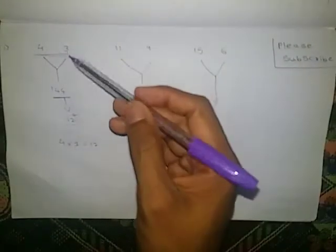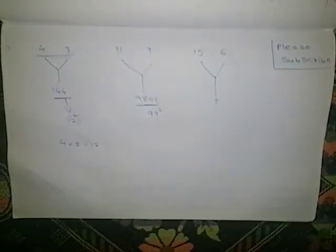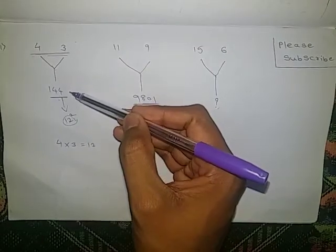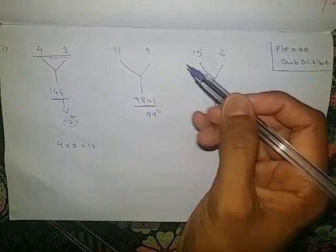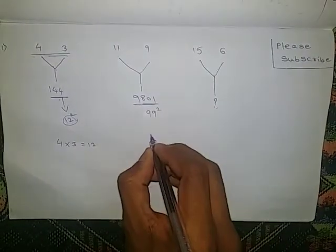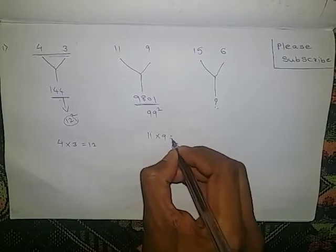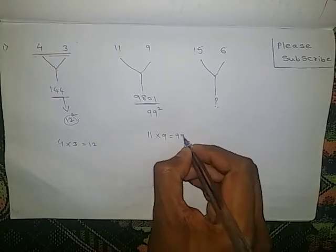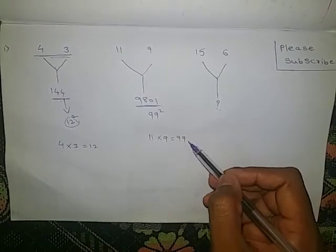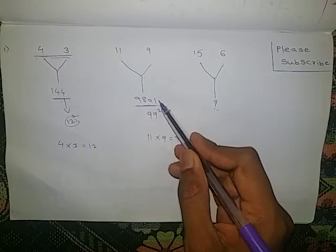That 12 squared is 144. The same way here also: 11 into 9 is 99. 99 squared is 9801.